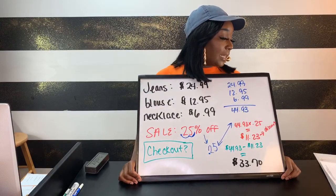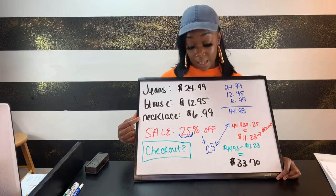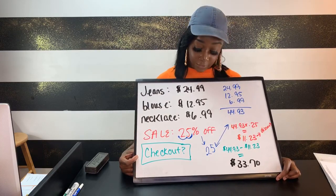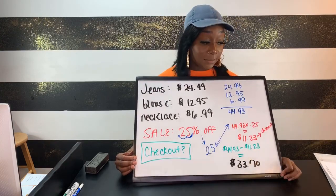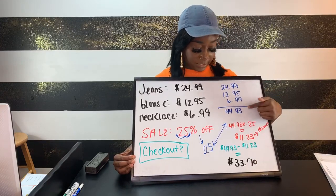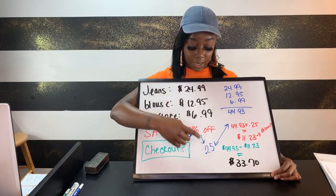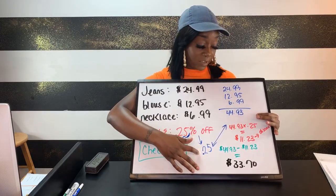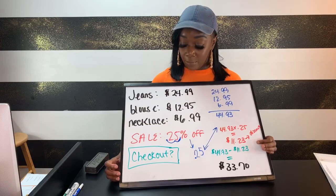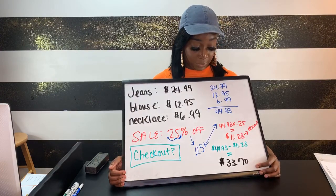Just to go through the question one more time: Tori purchased a pair of jeans for $24.99, a blouse for $12.95, and a necklace for $6.99. The store is having a sale for 25% off. How much will she pay at checkout, including her discount? We add all values — $44.93. Convert percent to decimal — 0.25. Multiply together — $11.23 is her discount. Subtract from total: $44.93 minus $11.23 gives $33.70, which is paid at checkout.